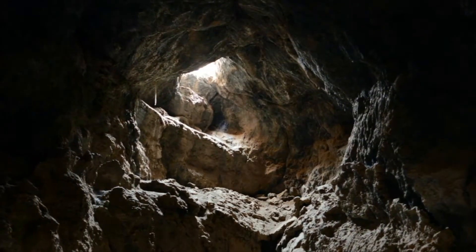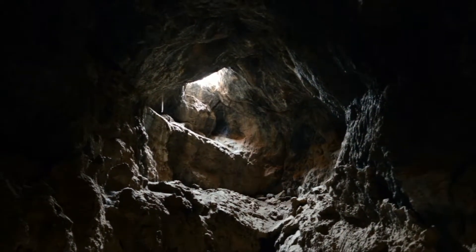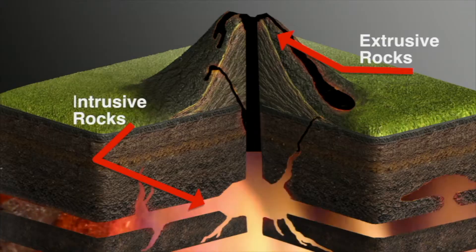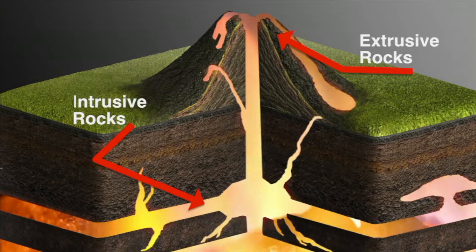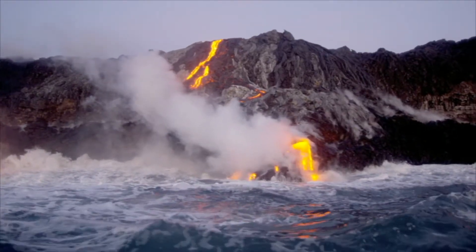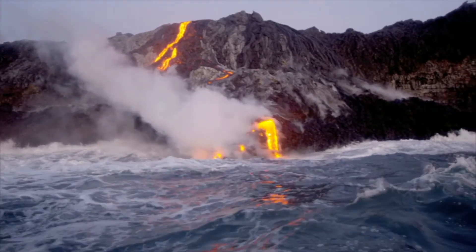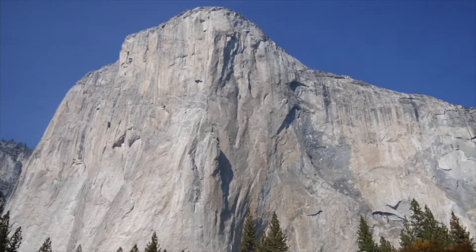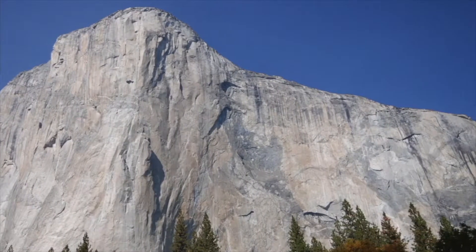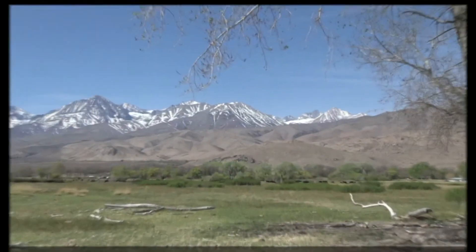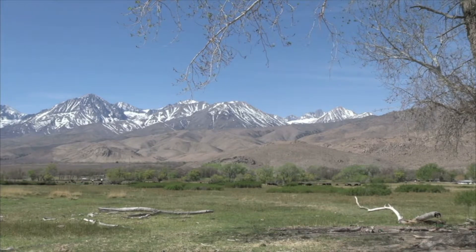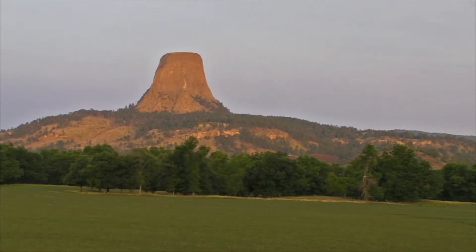Another type of igneous rock forms deep beneath Earth's surface. Magma is slowly pushed up from Earth's interior through a process known as intrusion. Unlike lava on the surface, this rock slowly cools underground into a solid. The cooling takes millions of years, and as tectonic forces uplift the rock and surface layers are eroded, the process creates mountain ranges and other landforms. The Sierra Nevada mountains in California and Devil's Tower in Wyoming are formed mostly of intrusive rock.